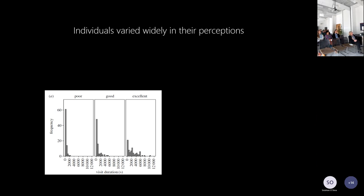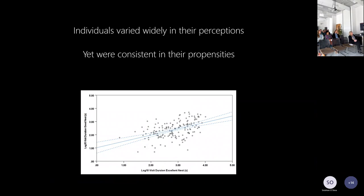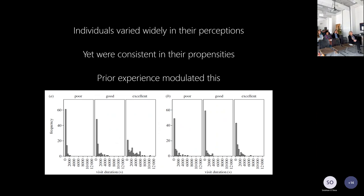The other key question was whether levels of quality preference are conserved for the same ant across experiments, or just totally random. The answer was that generally speaking, ants maintained their distribution in the preference threshold — an ant that was very picky in one situation would continue to be picky. We also found prior experience modulating thresholds: going from a poor nest to a good nest makes the good nest seem better, but going from an excellent nest to a good nest suddenly makes that good nest look not quite as good and many will reject it.